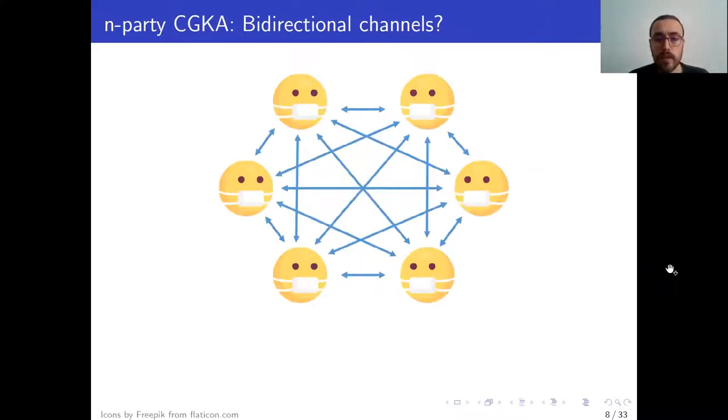So going back for a second, we mentioned that we know how to build these in the two-party case. So one could think that one could build a group by just instantiating these bidirectional channels between every pair of users. And indeed, this works. The problem now is that if a user wants to update their keys, they need to communicate the new key to every single user, which of course has linear communication costs in the size of the group. And for very big groups, this makes it unfeasible.